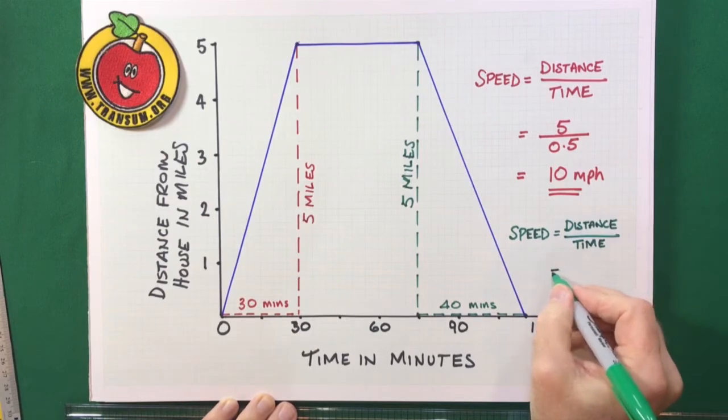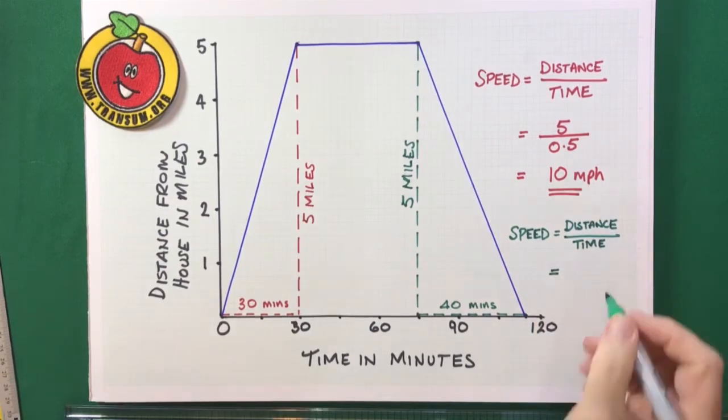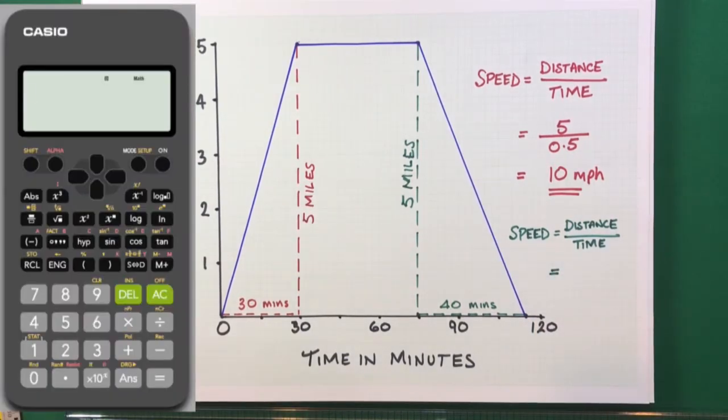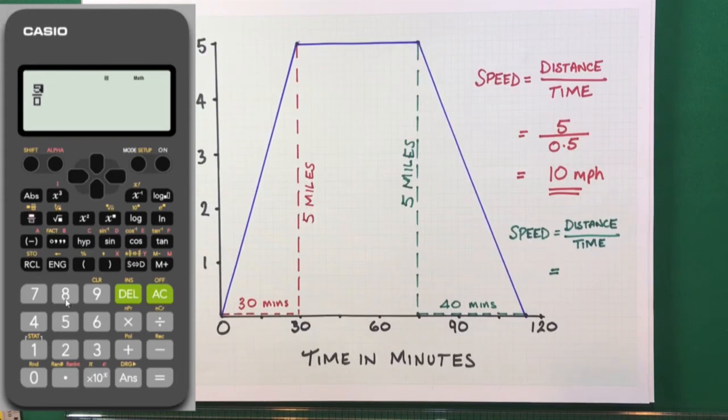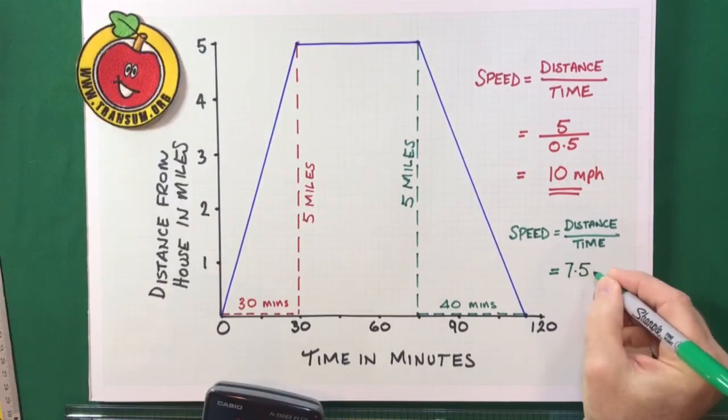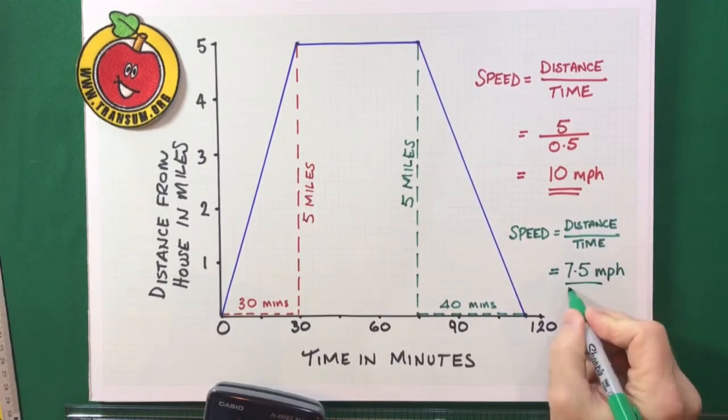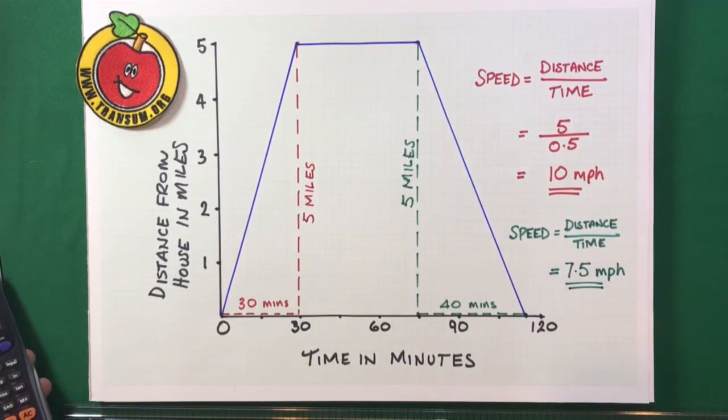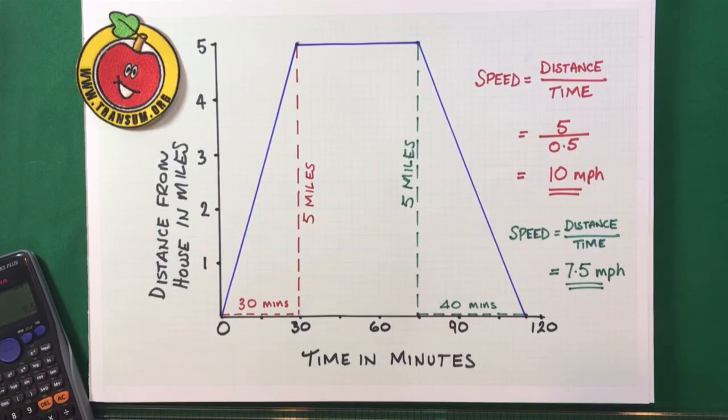So, the speed is equal to rise over run or distance over time. And that will give me five over... Well, it's 40 minutes. So, I can actually use the degrees, minutes, and seconds button on the calculator to type in 0 hours, 40 minutes as a time. And then I get the answer, 7.5 miles per hour. So, that was how fast he came back home after refueling at the restaurant.